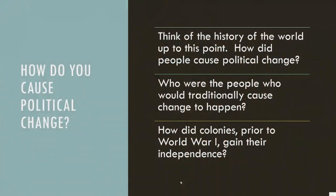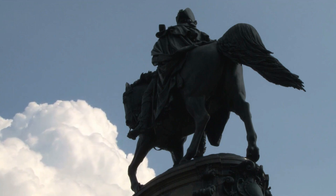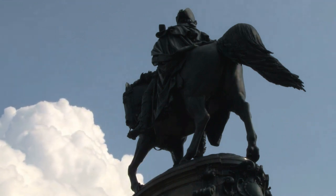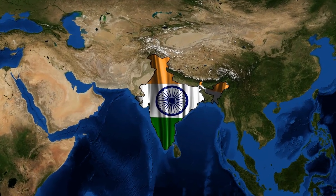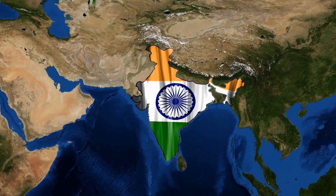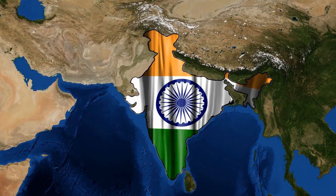As we go through the quest for India's independence, think about political change and how people have caused political change throughout history. Who were the people who would traditionally cause this change, and how did colonies prior to World War I gain their independence? With the British formally taking over India, groups formed that opposed colonization and pushed for their own independence. The Indian National Congress was formed in 1885, and they wanted home rule. They wanted India to be independent, and they even had British citizens siding with them and supporting Indian independence.